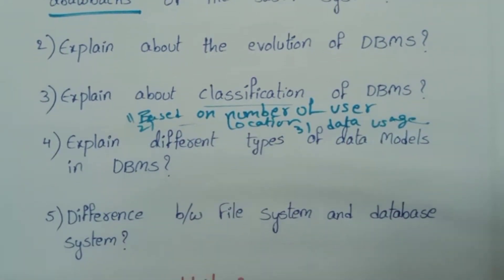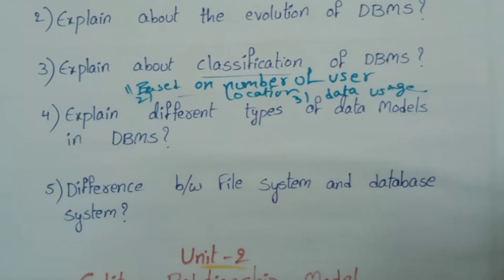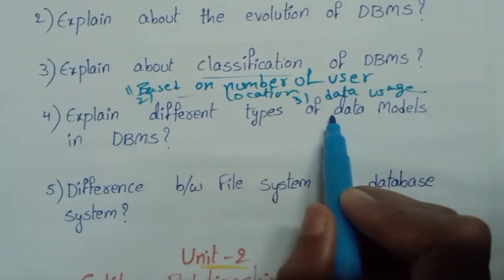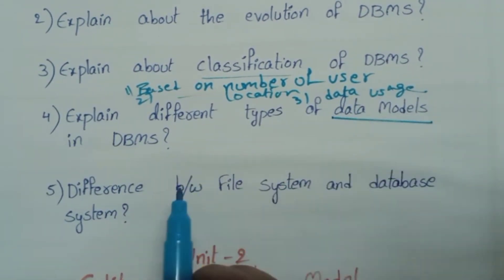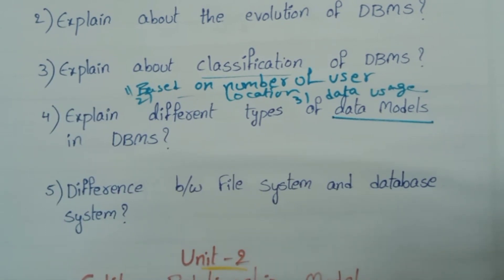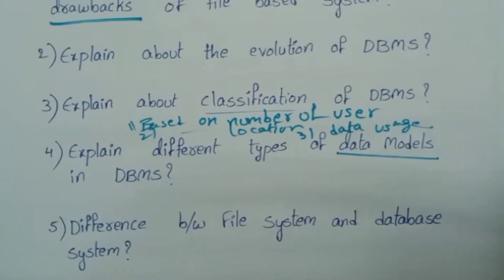Next, types of data models — what are the types of data models? And the difference between file system and database system. That's Unit 1 — there are 5 questions in total.